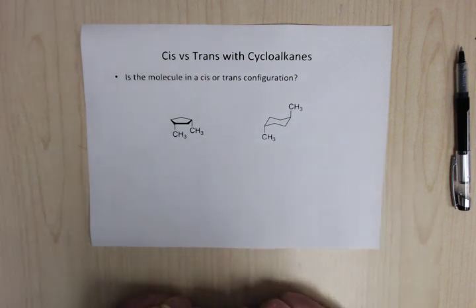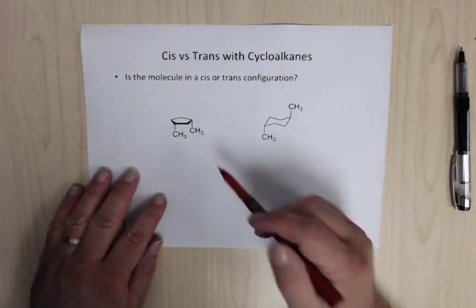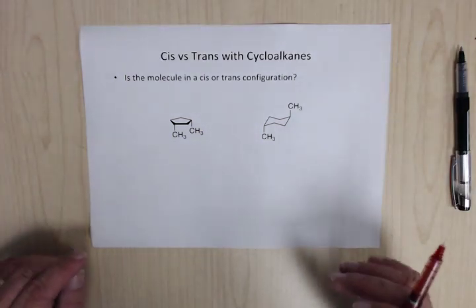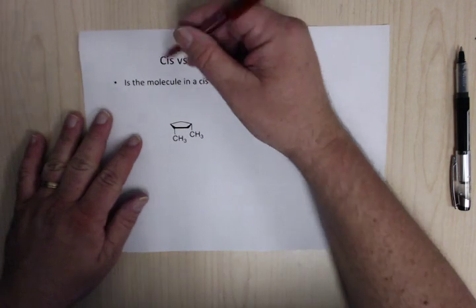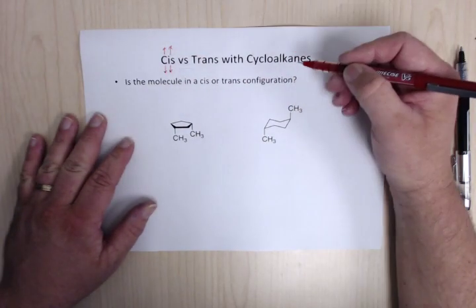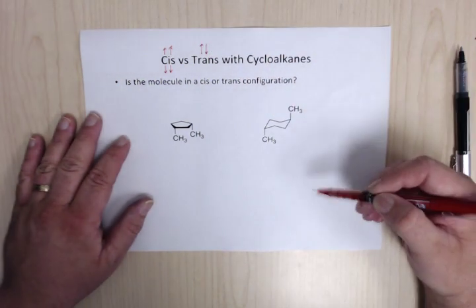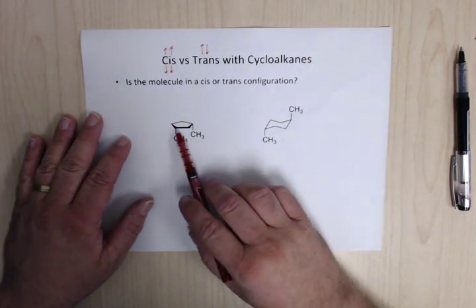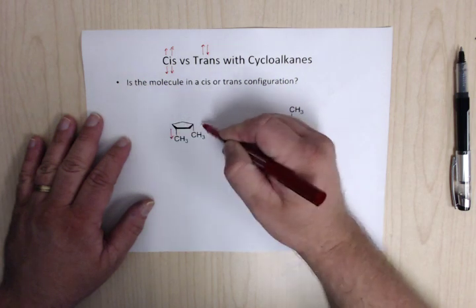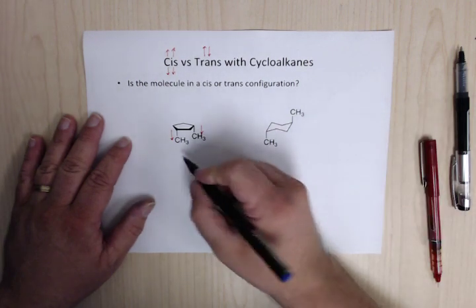First up: figuring out cis and trans in a cycloalkane. For cis, it's all about whether the groups are pointing up or down — they're either both pointing up or both pointing down. For trans, you have one pointing up and one pointing down. For this five-membered ring, they're both pointing below the ring, so they're both down — this one would be cis.